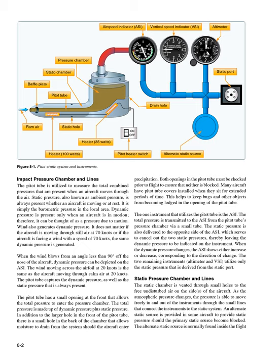The pitot tube captures the dynamic pressure as well as the static pressure that is always present. The pitot tube has a small opening at the front that allows the total pressure to enter the pressure chamber. The total pressure is made up of dynamic pressure plus static pressure. In addition, there is a small hole in the back of the chamber that allows moisture to drain from the system should the aircraft enter precipitation. Both openings in the pitot tube must be checked prior to flight to ensure that neither is blocked. Many aircraft have pitot tube covers installed when they sit for extended periods of time, to keep bugs and other objects from becoming lodged in the opening.